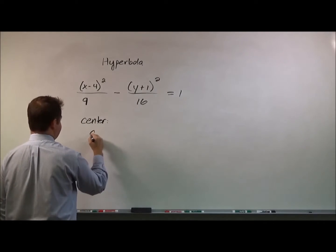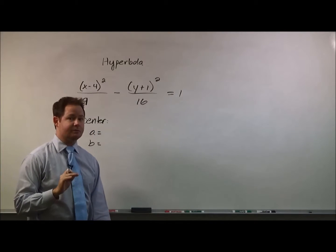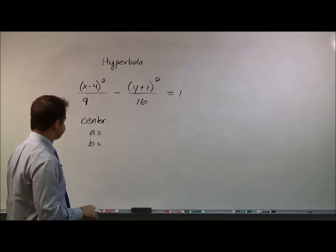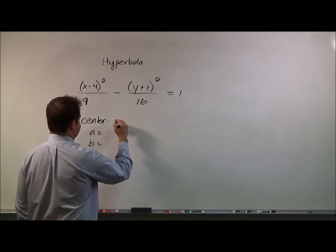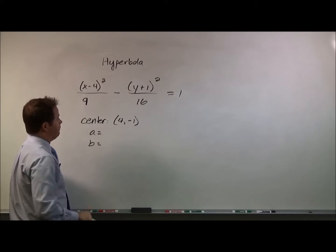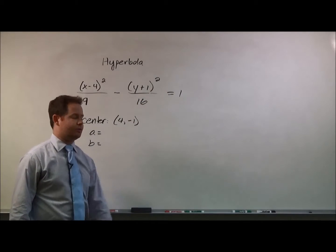We want to identify the center, the value of a, and the value of b. So for a hyperbola, similar to what you've probably already seen for a circle and for an ellipse, the center that you have is going to be (4, -1), because you're pulling that from the value of h and the value of k in your standard form.